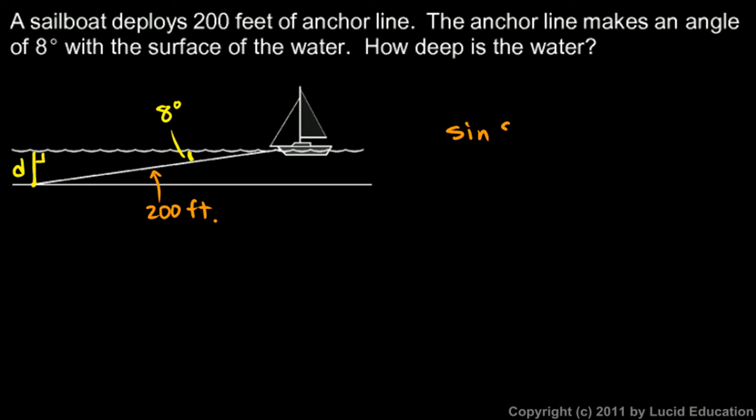So let's write this. The sine of 8 degrees, the sine of an angle is the opposite over the hypotenuse. Looking at this right triangle, the sine of the 8 degree angle is D over 200 feet. We can rearrange it algebraically for D. D ends up being 200 feet times the sine of 8 degrees, and the calculator tells us that's 28 feet.